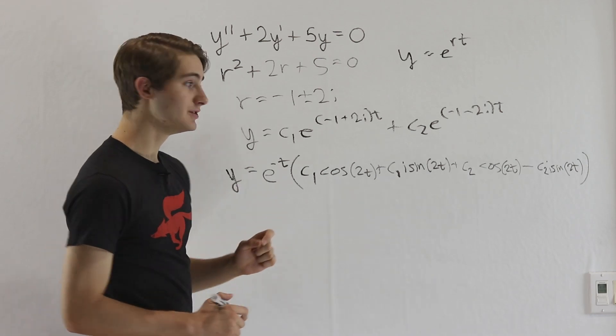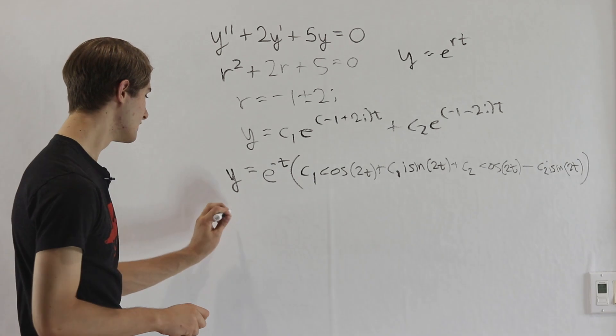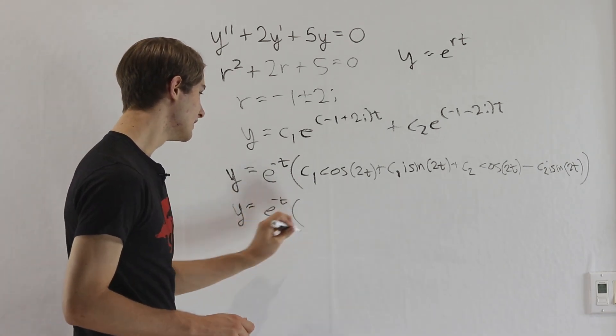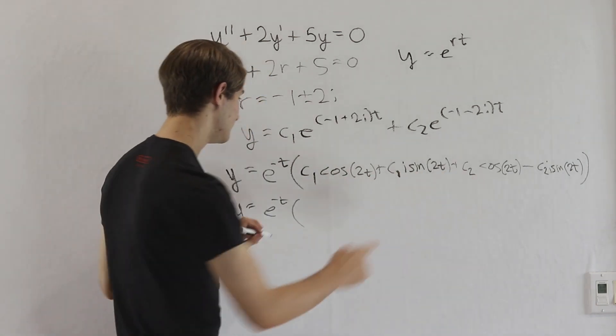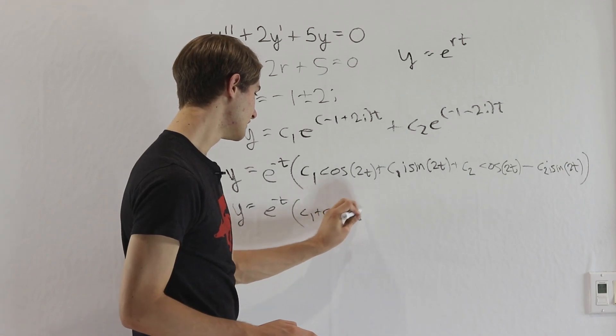And now what we want to do is break this up in terms of the cosines and the sines instead of c1 and c2. So we'll write y equals e to the negative t, and then if we look at the cosine of 2t, we have a c1 and a c2 right here. So c1 plus c2 cosine 2t.